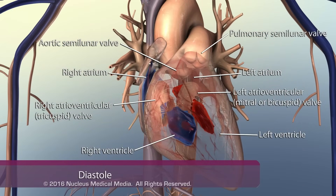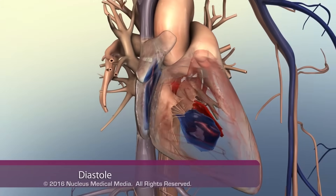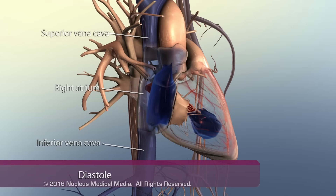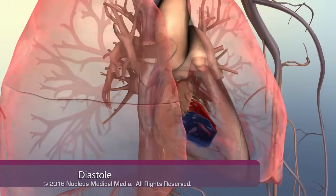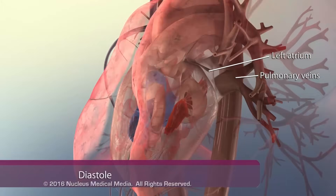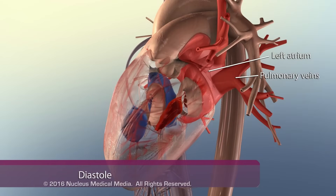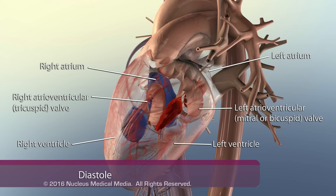Both atrioventricular valves are open while the pulmonary and aortic semilunar valves are closed. Blood flows into the right atrium through the superior and inferior vena cava, and blood flows from the lungs into the left atrium through the pulmonary veins. Then, blood moves from both atria into the ventricles through the open atrioventricular valves.